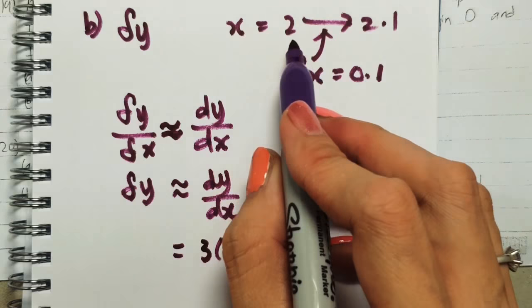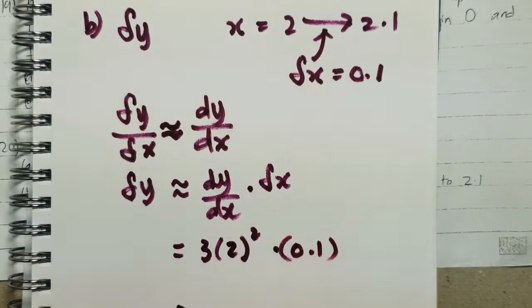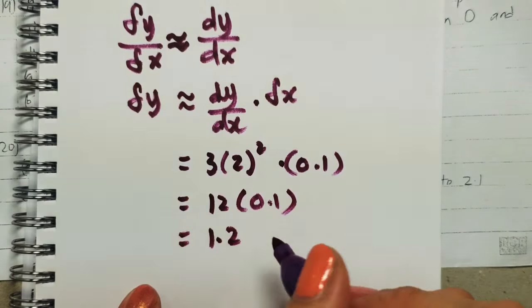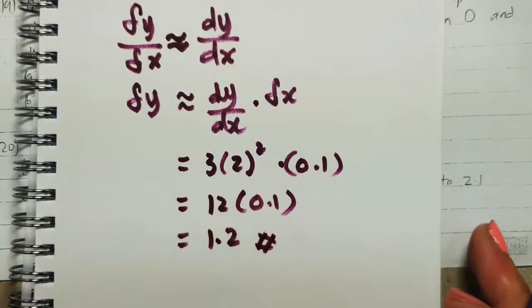And what is my x value? The x value is referring to the original 2. So let's put it in: 4 times 12, and then times 0.1. So we will have 1.2 as our answer. That is the del y for this question. Done.